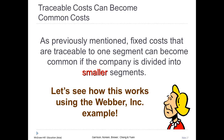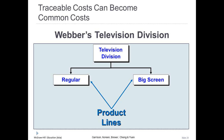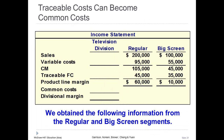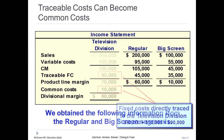The television division can be broken down into two major product lines: regular and big screen. Of the $90,000 of fixed costs previously traceable to the television division, only $80,000 is traceable to the two product lines, and $10,000 is a common cost.